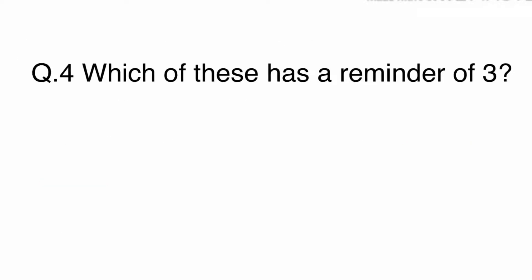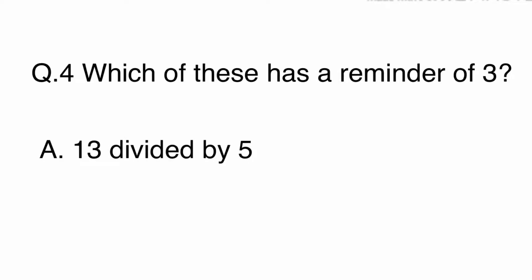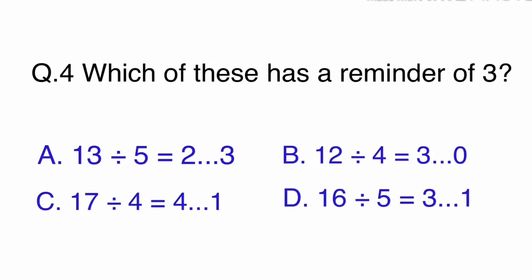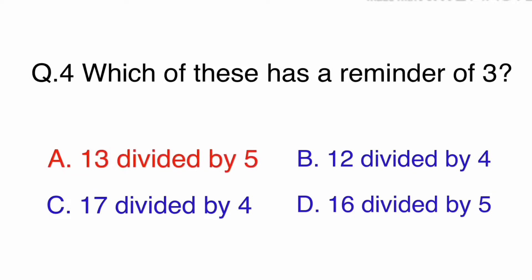Question 4. Which of these has a remainder of 3? Let's calculate these choices. There is only one choice with a remainder of 3, which is A. The answer is A: 13 divided by 5.